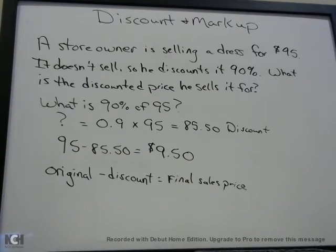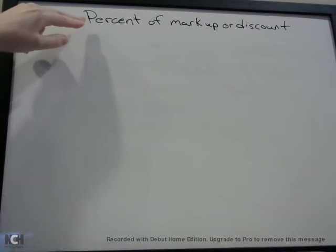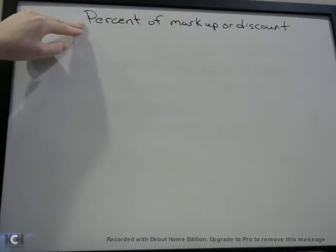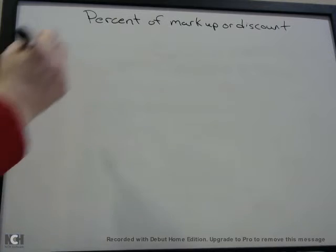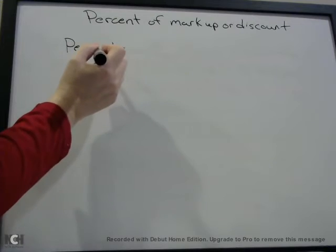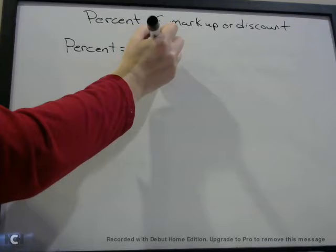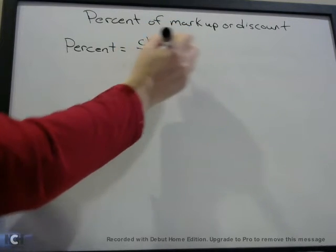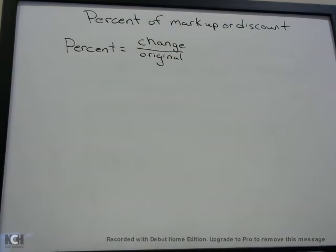Next we're going to do a couple of similar problems but with a different take. These have to do with the percent of markup or the percent of discount — two variations that could be on the test. The key thing to remember is: percent equals change over original. Just remember that — change over original.